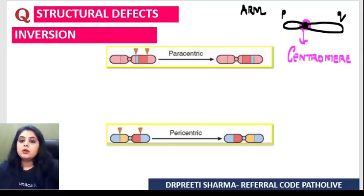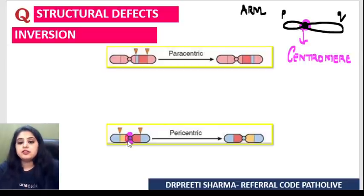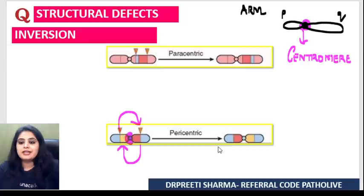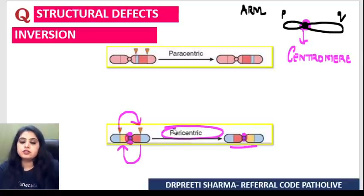If inversion has happened, a part of the chromosome gets inverted around the centromere — it's like a flip, and you can see the red and yellow getting exchanged. Since this involves the centromere, I call it pericentric inversion.